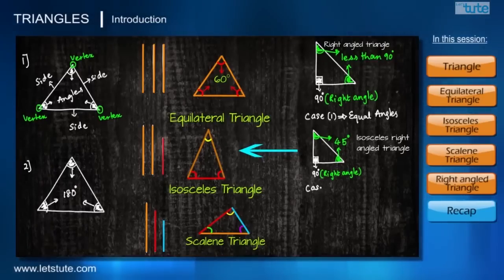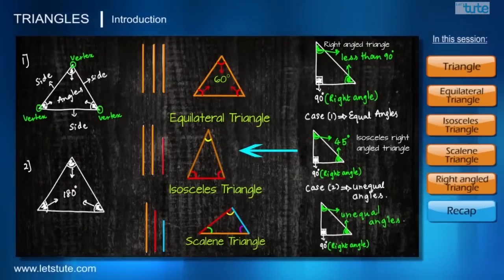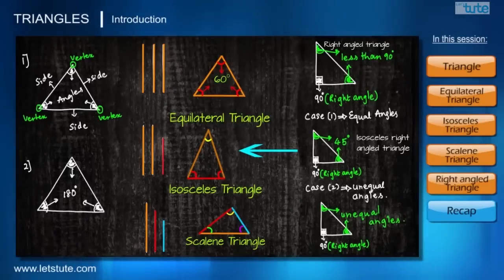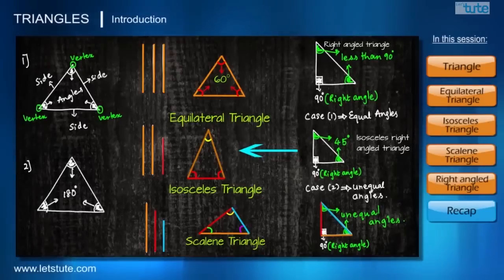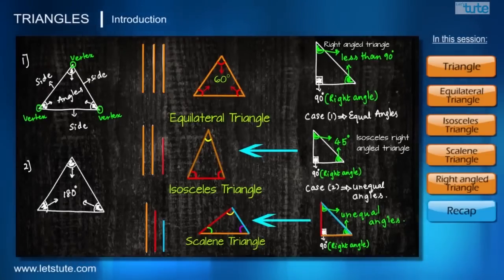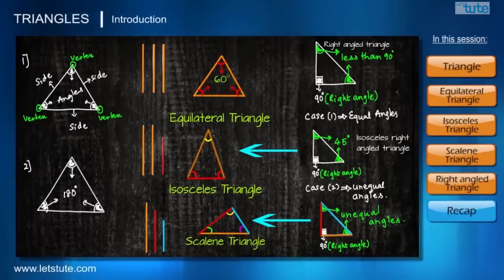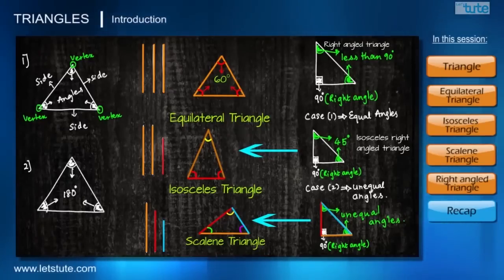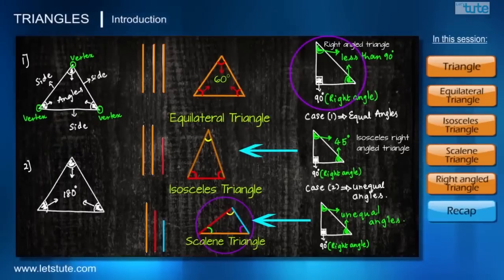Now for case two: if the two remaining angles other than the right angle are not equal to each other, then all three angles are different, which means all three sides will have different lengths. This follows the property of a scalene triangle, where all three sides have different lengths and all three angles have different measures. Such triangles are called scalene right-angled triangles.